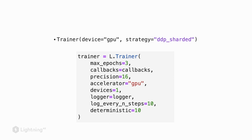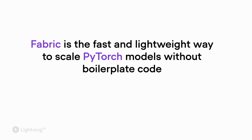In this video we are going to talk about Fabric, a way of scaling PyTorch models without any boilerplate code. Imagine you really like the Lightning Trainer and all the features it contains — for example, mixed precision training and multi-GPU training — however, even though you like the Lightning Trainer, you don't really want to restructure your code using a LightningModule. In that case, you can use Fabric, which is the fast and lightweight way to scale PyTorch models without any boilerplate code.